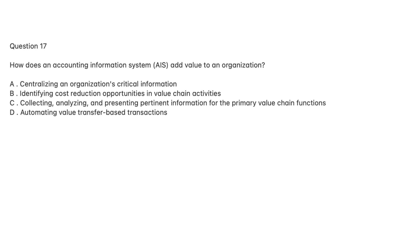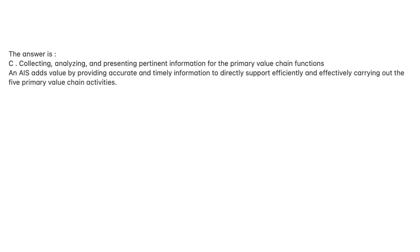Question 17. How does an accounting information system, AIS, add value to an organization? A. Centralizing an organization's critical information. B. Identifying cost reduction opportunities in value chain activities. C. Collecting, analyzing, and presenting pertinent information for the primary value chain functions. D. Automating value transfer-based transactions. The answer is C. An AIS adds value by providing accurate and timely information to directly support efficiently and effectively carrying out the five primary value chain activities.